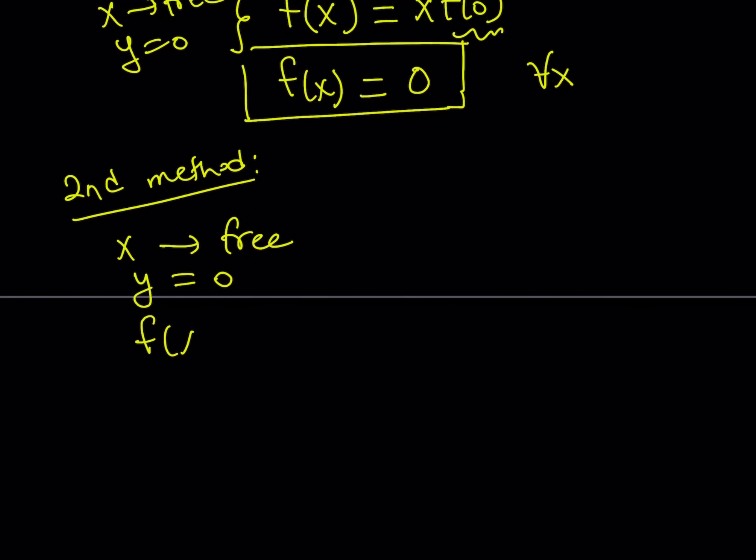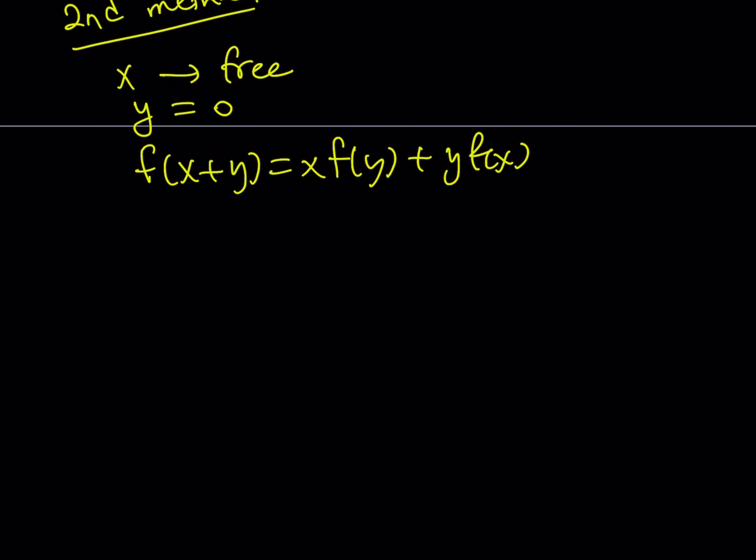our equation was f(x + y) equals xf(y) plus yf(x). And here, I'm going to keep the x as is and replace y with 0. So I'm going to be getting f(x) equals x times f(0). Awesome. And of course, this is going to disappear, right?